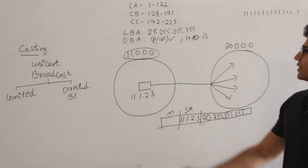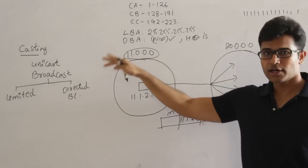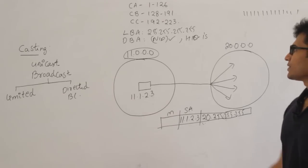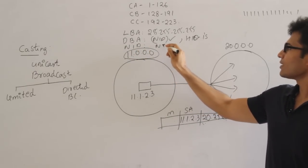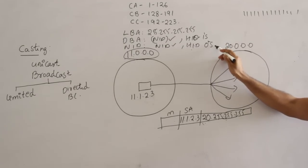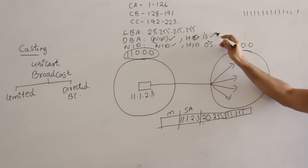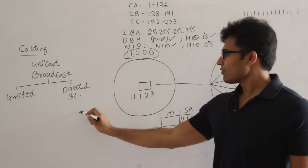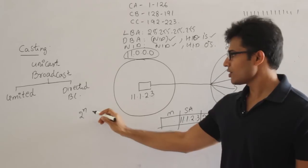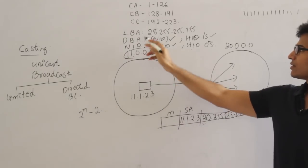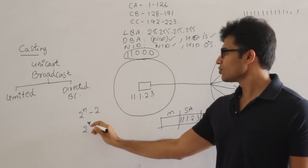We have now seen three kinds of addresses. The network ID has a valid number in the network ID part and all zeros in the host ID part. All zeros in the host ID part means it represents the entire network and cannot be assigned to any host. All ones in the host ID part represents the directed broadcast address. So from 2^n IP addresses in a network, two must be removed — one for network ID and one for directed broadcast address.